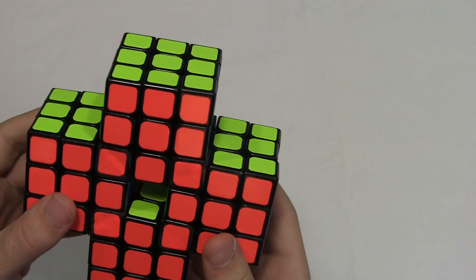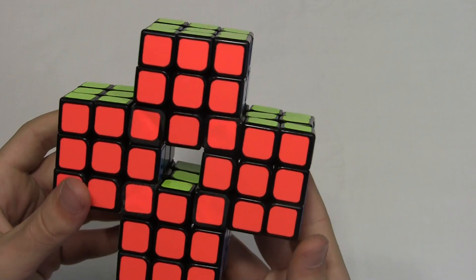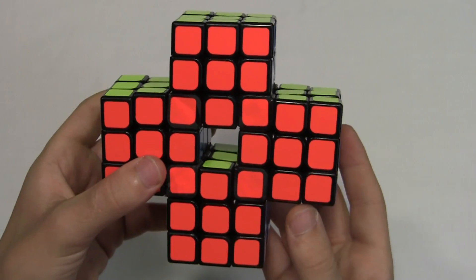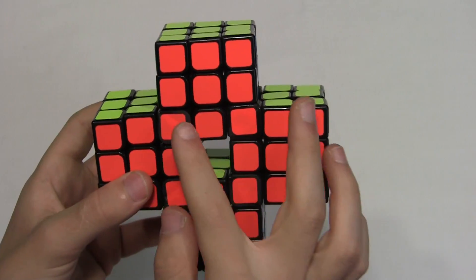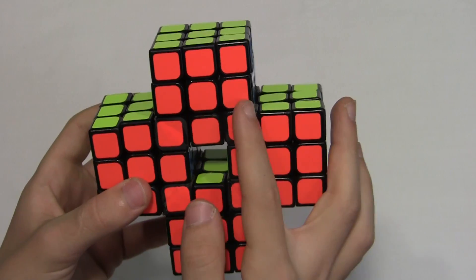Hello. This is my latest mod, the Quadruple Siamese Cube. I made it from four chi sails, and they're just glued together at the corners.